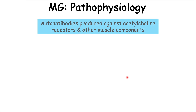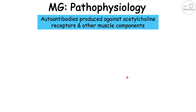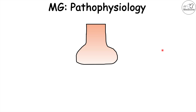Now let's talk about the pathophysiology behind why myasthenia gravis occurs. It is an autoimmune condition involving autoantibodies being produced against acetylcholine receptors and other muscle components. Autoantibodies are antibodies produced against the patient's own tissues. Before we talk about what those antibodies do, let's talk about what's supposed to happen when a patient wants to contract one of their muscles.